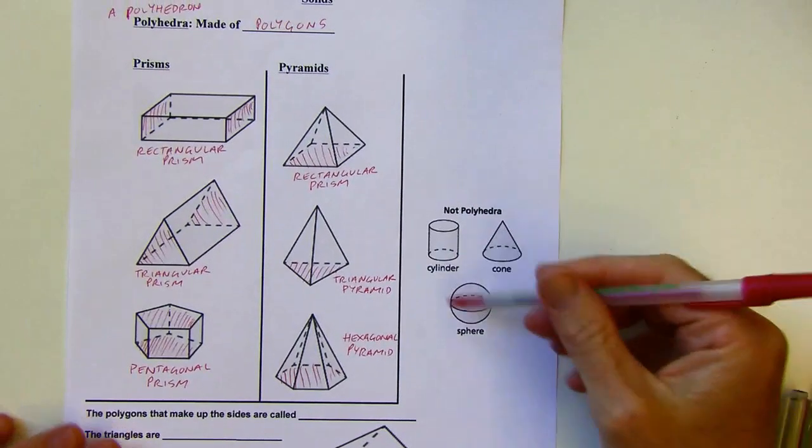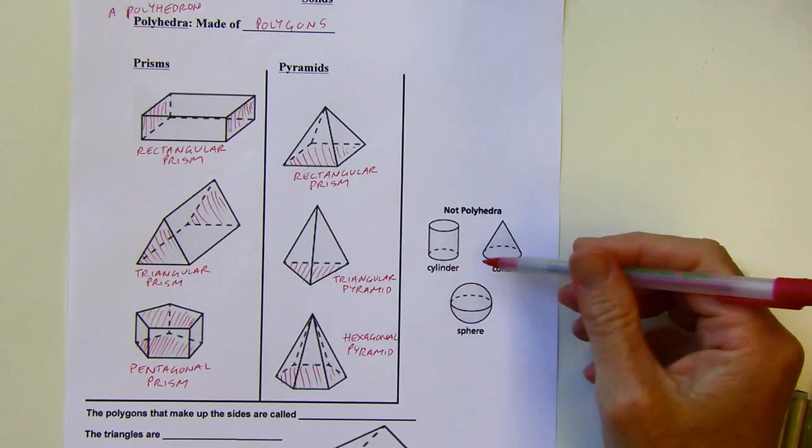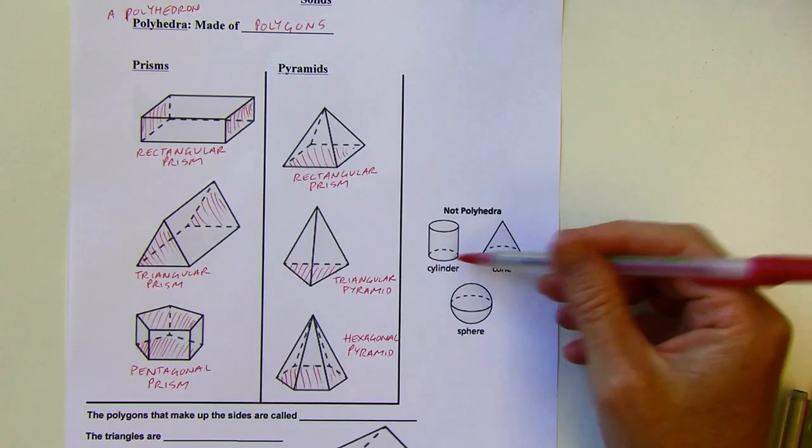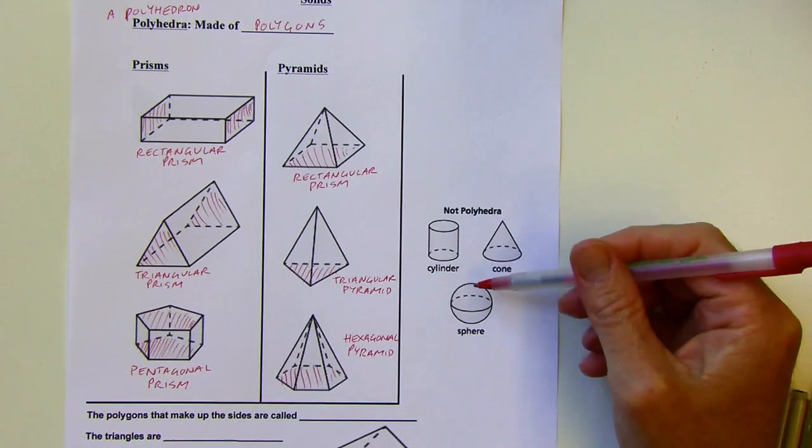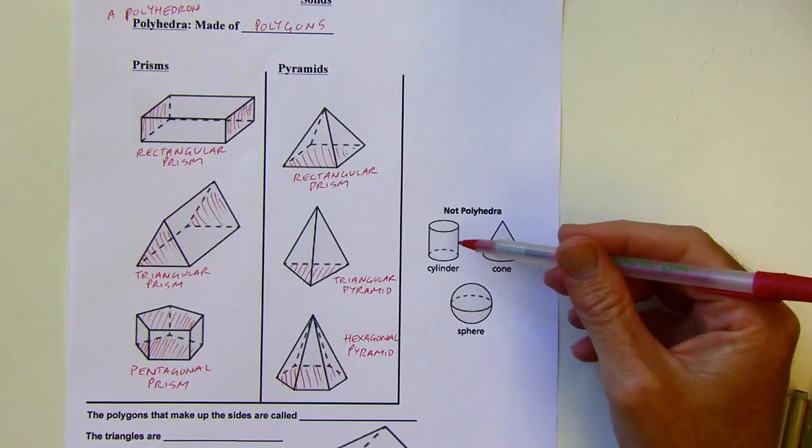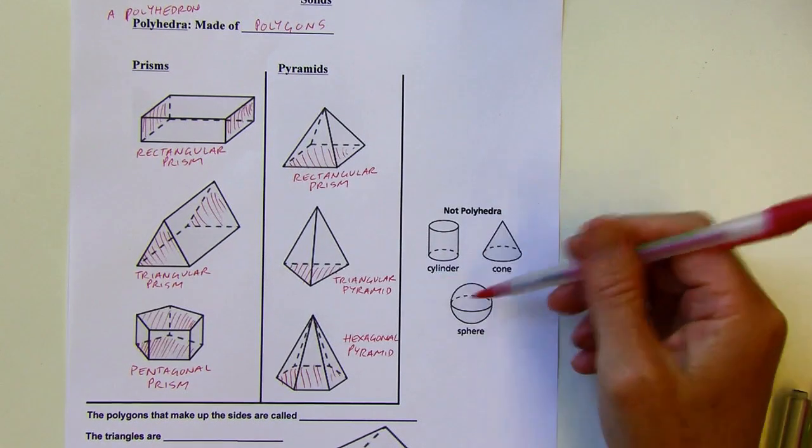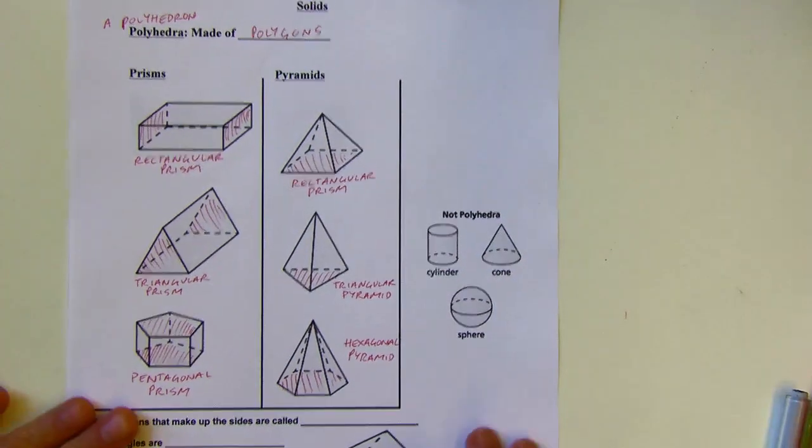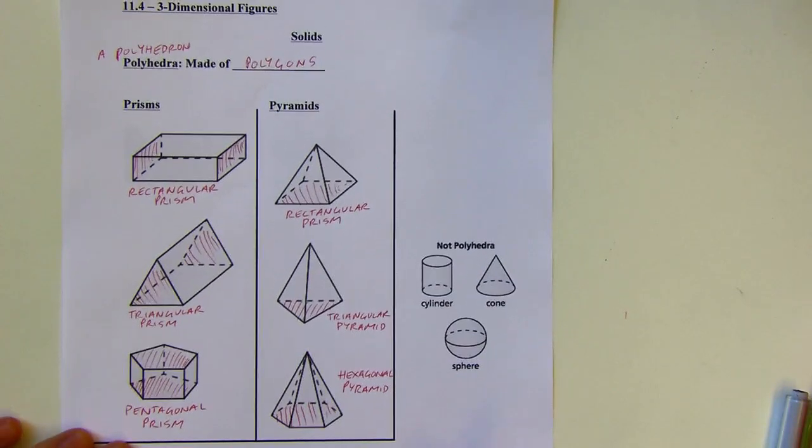And then I've got some figures that, these are solid figures, but they're not polyhedra because they're not made of polygons. They all have curved shapes somewhere in them. And circles are not polygons. So these don't count as polyhedra, even though they are solid figures.